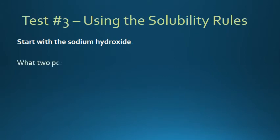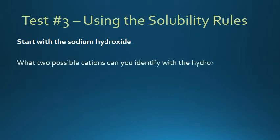So, starting with the sodium hydroxide, you want to ask yourself, what are the two possible cations you can identify using the hydroxide ions? You know where the hydroxide is, and you know what two things make a precipitate with the hydroxide. Look at your net ionic equations. What are the two cations you can identify?